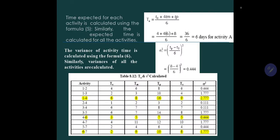First, we have to calculate the time estimate. For the time estimate: T0 plus 4TM plus TP divided by 6. For activity 1 to 2, we will take T0 is 4 plus 4 into 6 plus 8 divided by 6. So T is 6. For calculation of sigma square, this will be (TP minus T0) divided by 6 to the whole square. So (8 minus 4) divided by 6 to the whole square will come out 0.40. Similarly, we will calculate for each activity.